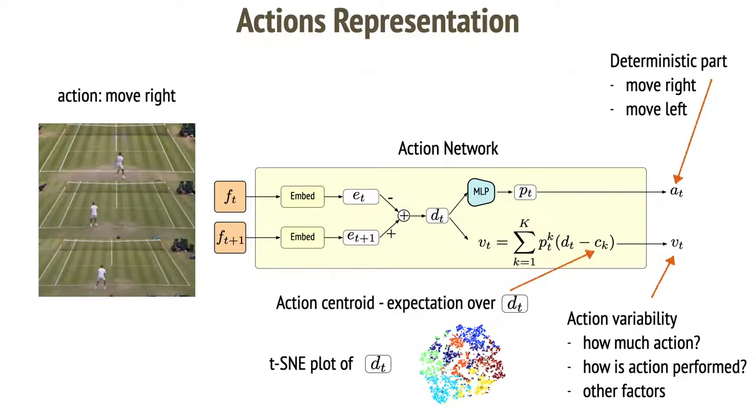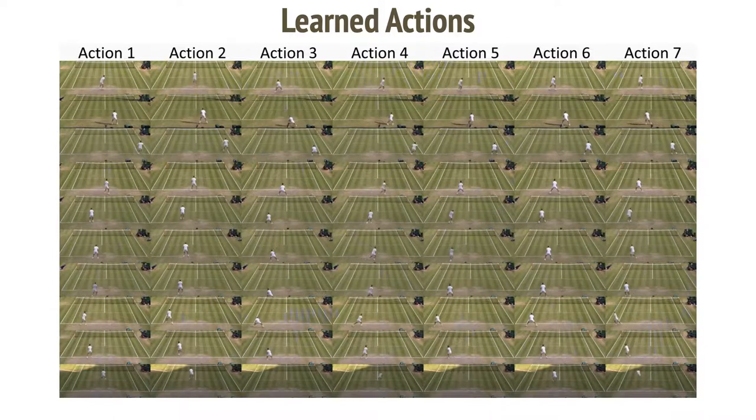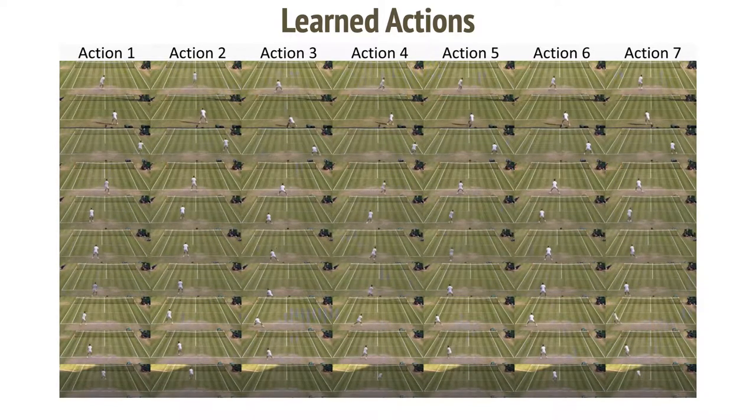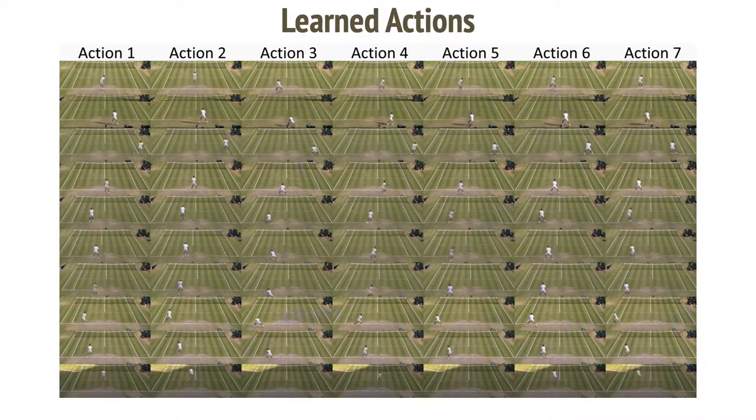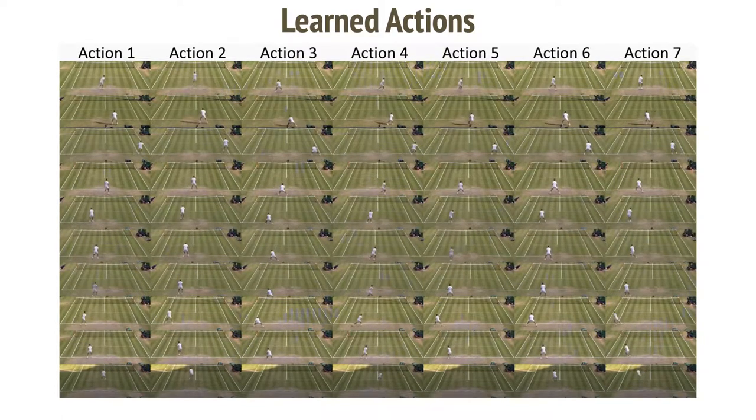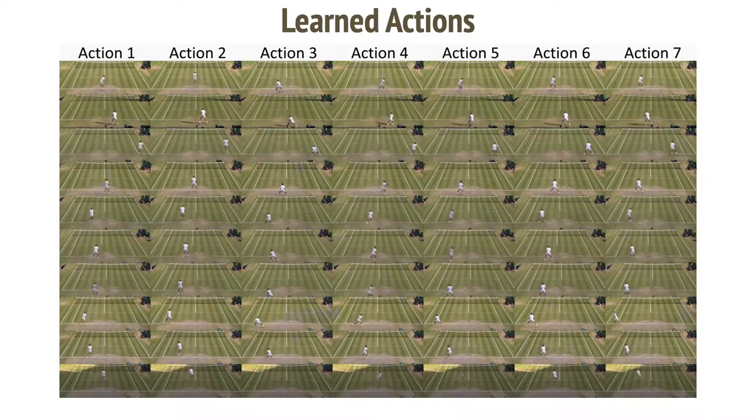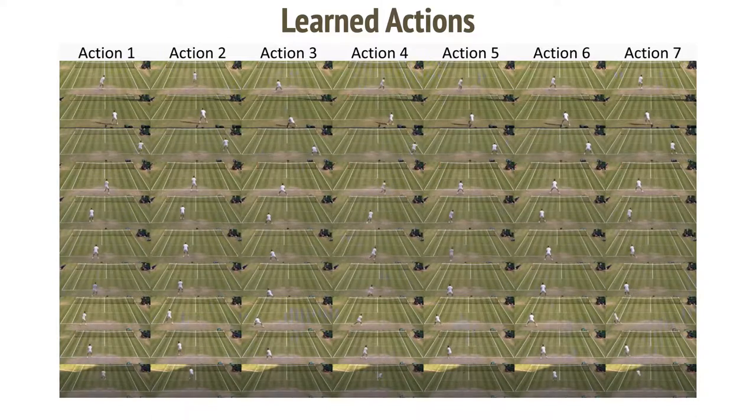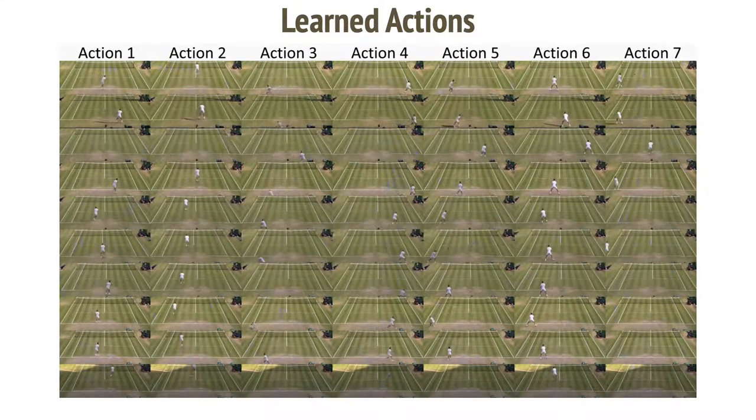For tennis, the model has learned seven distinct actions which correspond to move right, advance to the net, move back, move left, and stay. Some actions repeat. We can see that actions are consistent in each column. Each row represents a different way of executing the action, including varying speed, direction, and the way the action is performed.